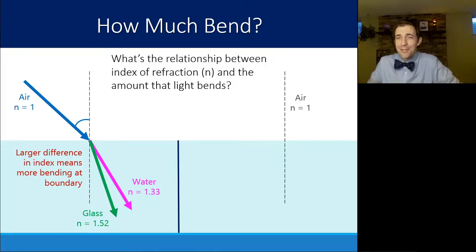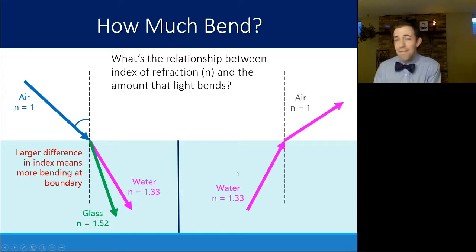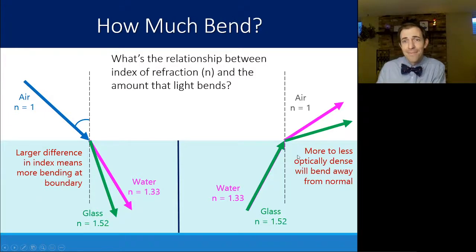Next video, we're going to talk about how you can actually quantify this and figure out the exact angle. But right now, it's important to conceptually know what to expect as well. If I have something going out, remember I bend away from that least optically dense normal line. And water to air, I bend like this. If I have the same index or the same incident angle through glass instead, I'm just going to bend more on the way out. So again, the larger the difference, the more the bend. You can see this going the opposite direction as well. The smaller the difference, the smaller the bend.